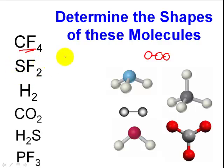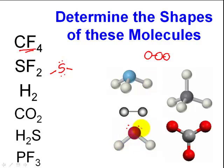Here we have SF2 — sulfur difluoride. Sulfur is the central atom, with a fluorine on each side, giving three atoms total. My choices are linear with three or bent. To have a bent structure, I need an unshared pair of electrons on the central atom. SF2 has three atoms, and on the central atom I have two unshared pairs of electrons — so SF2 is a bent structure.